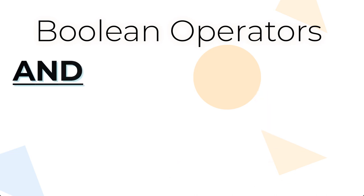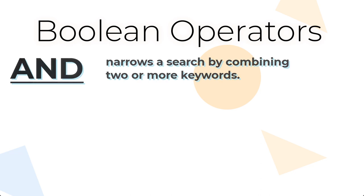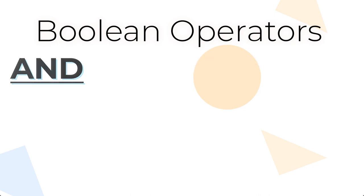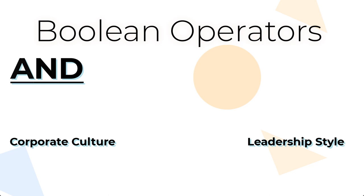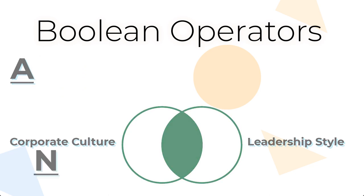AND narrows a search by combining two or more keywords. This is a good way to combine different areas of your research topic to ensure that you are finding results specific to what you need. For example, when you use AND to combine the keywords corporate culture and leadership style, you are letting the database know that you want both of these topics to appear in the search results.